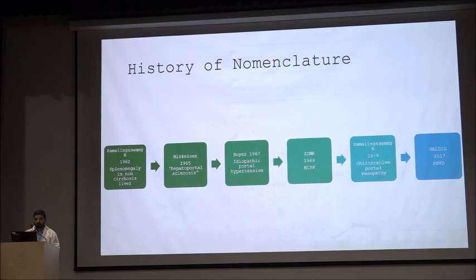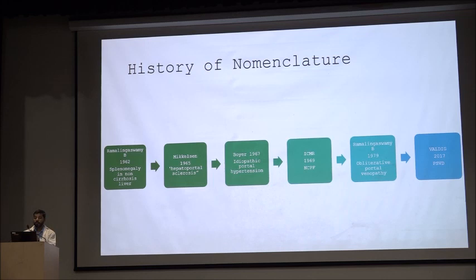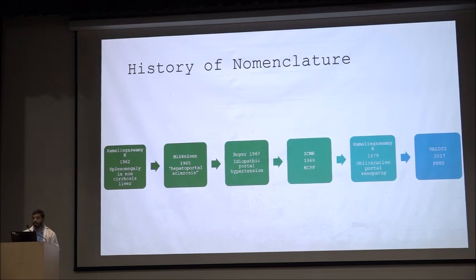Let's go back to history. In 1962, Professor Ramal Inuswamy studied patients with splenomegaly and non-cirrhosis. Mickelson in 1965 coined the term hepatoportal sclerosis. Boyer in 1967 coined the term idiopathic portal hypertension. In 1969, ICMR — Indian Council of Medical Research — coined the term NCPF. In 1979, the pathological term obliterative portal venopathy was also coined. And in 2017, the Vascular Liver Disease Interest Group coined the term PSVD.